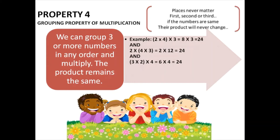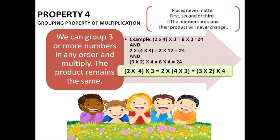For example, if we have three numbers — two, four, and three — in any order we can multiply two numbers first and then the third, and the product will be the same. Two times four is eight, and eight times three is twenty-four. Rearranging: four times three is twelve, and twelve times two is twenty-four. Again: three times two is six, and six times four is twenty-four. So two times four times three equals four times three times two equals three times two times four.